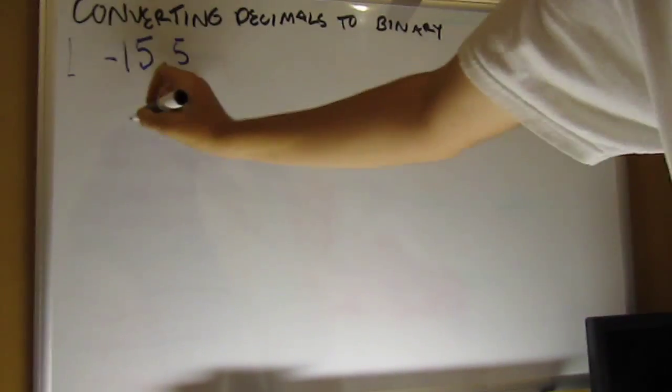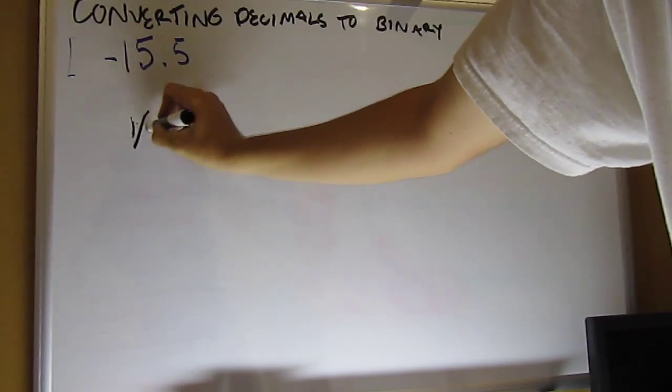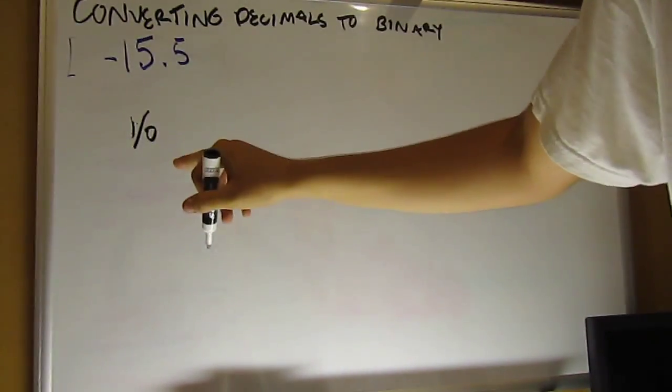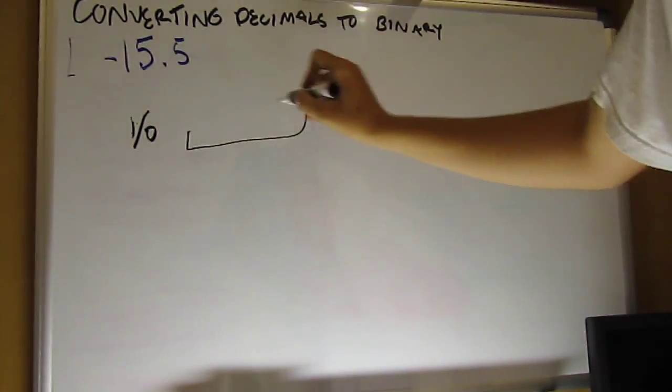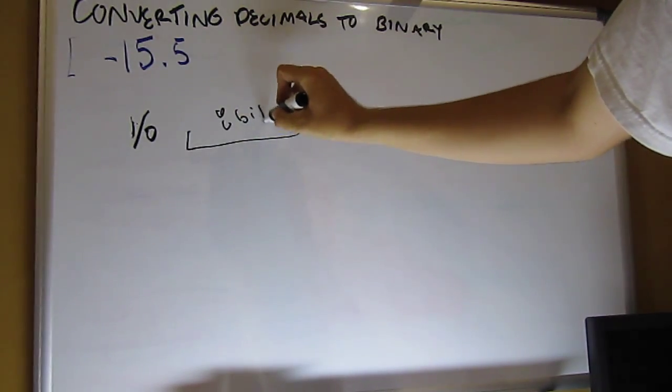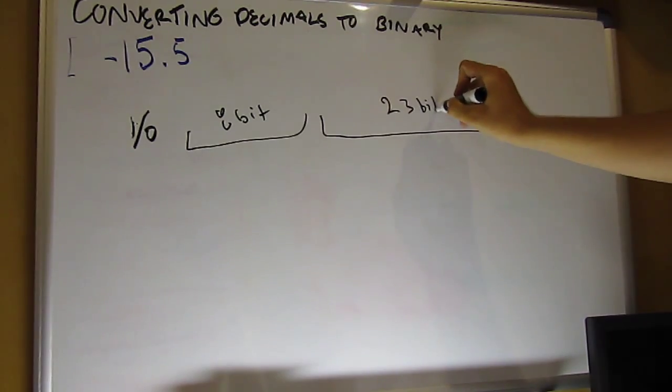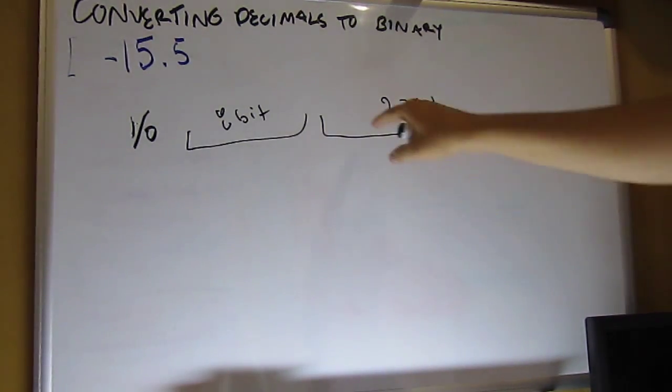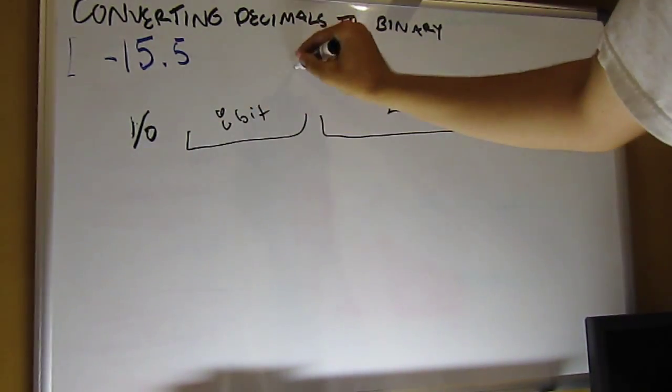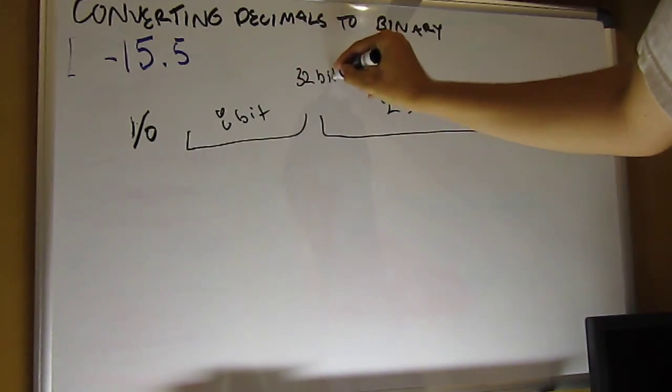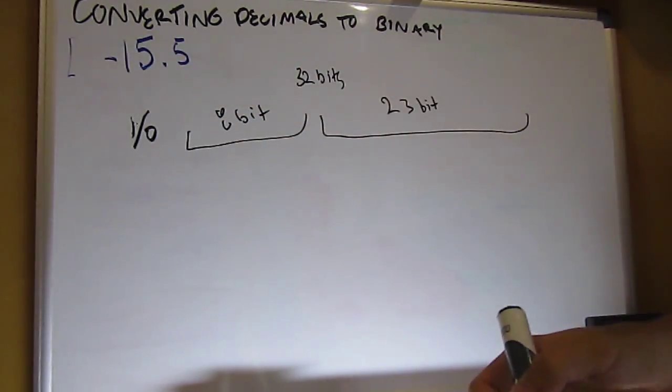So first off, let's just see how this is stored. We have our sign bit, which is 1 or 0, 1 being negative, 0 being positive. Then we have our 8-bit word, and then I think it's our 23-bit mantissa. All together this is 32 bits. And this is how we're going to store negative 15.5.